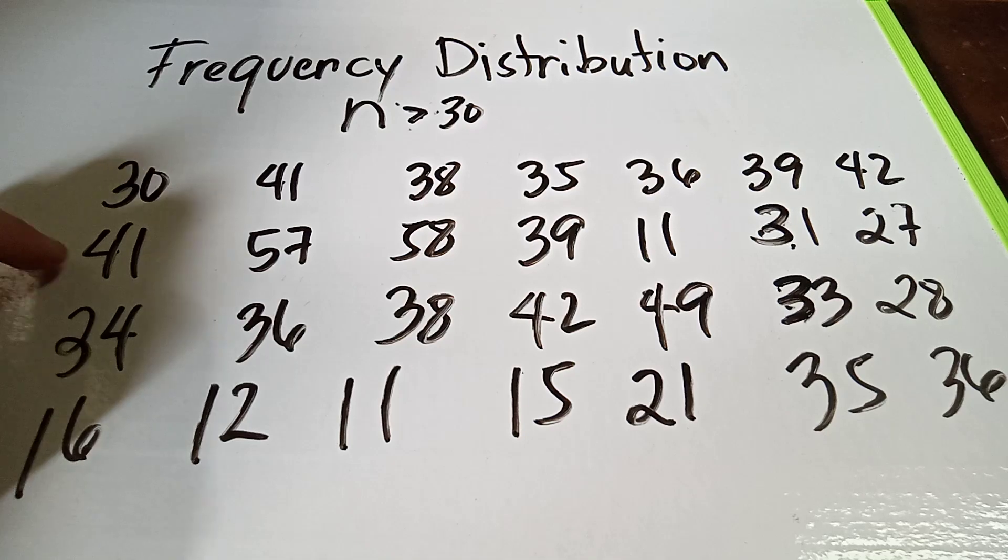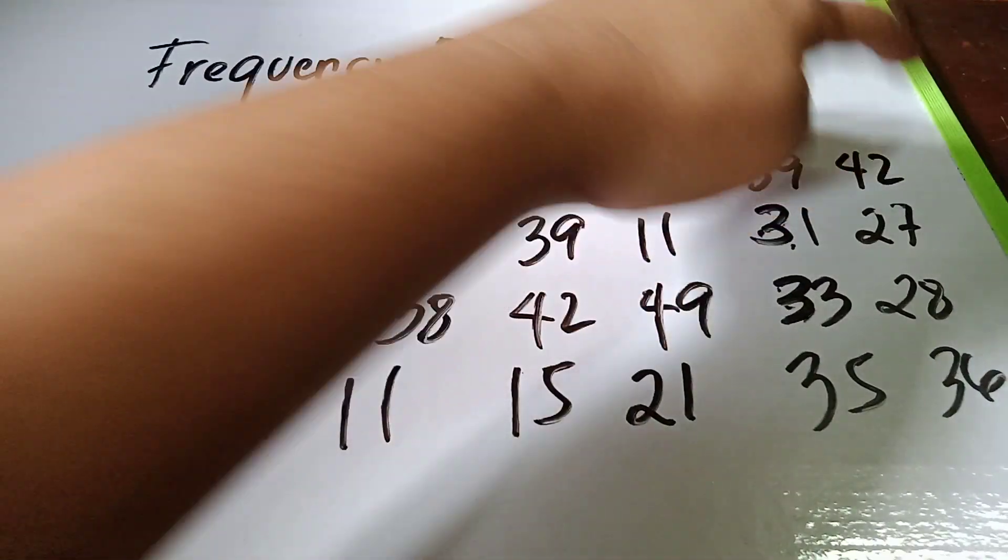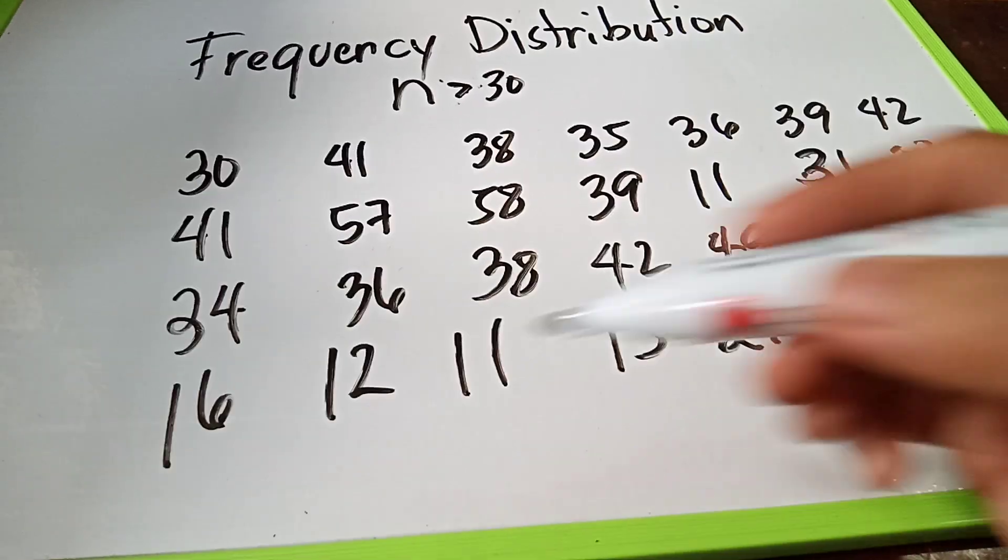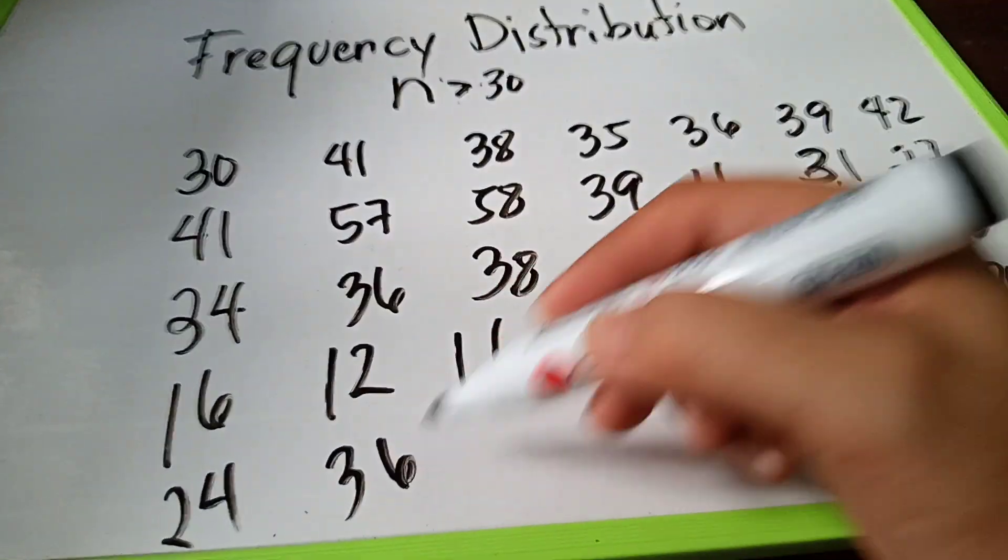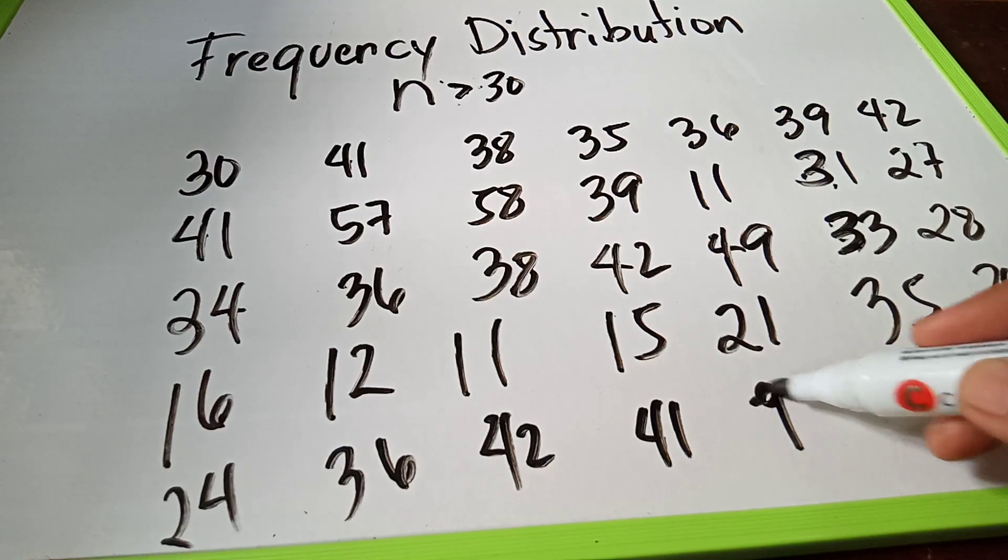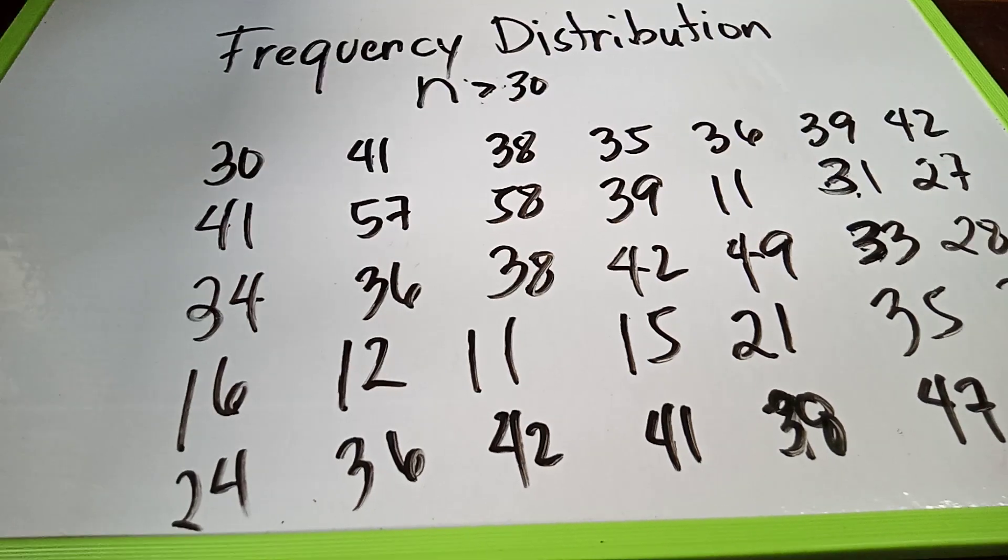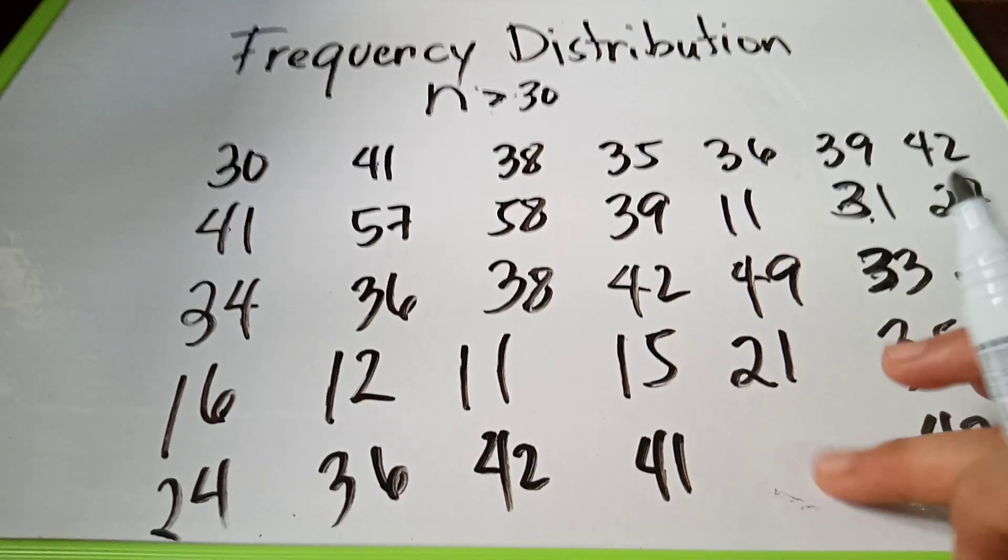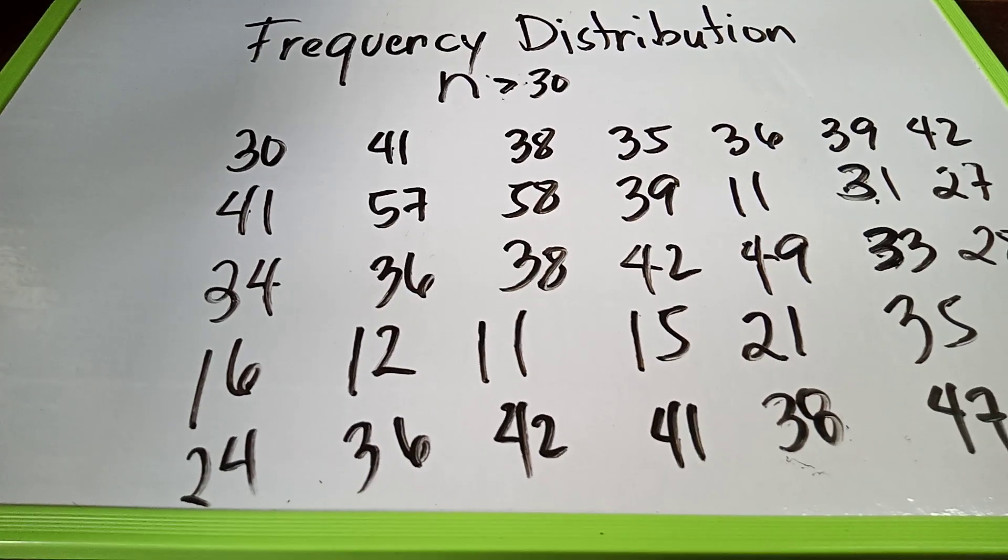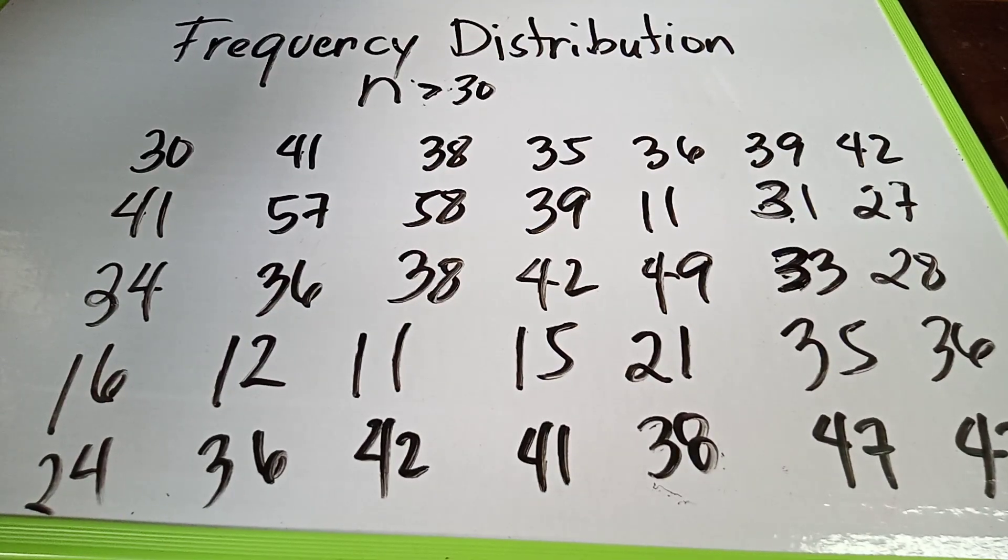So how many? This is 28, and we need to add 24, 36, 42, 41, 38, 47, 42. Suppose these are all numbers. This is greater than 30, or the sample data greater than 30, we will use frequency distribution.